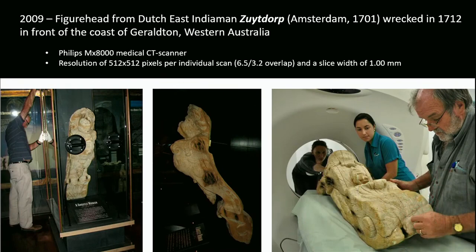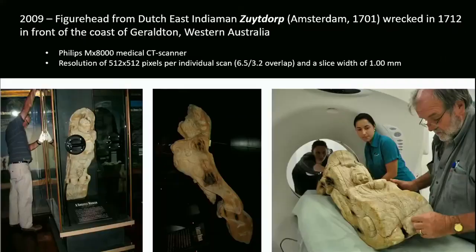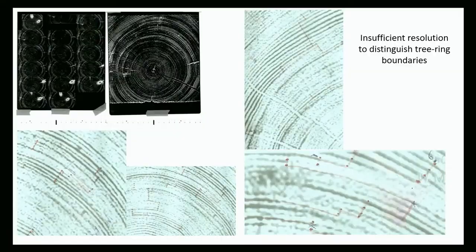My first experience with computed tomography was another figurehead — this one from a Dutch ship that wrecked in Australia in 1712, the Zuytdorp, currently at Geraldton in Western Australia. It's very well preserved, and they put it on a medical scanner. They sent me the analog sheets for me to do the dendro on those. As you can see, when you look at this image intuitively you see some rings, but we really need to see them all — we cannot miss any, because then our series is broken and we don't get a date.